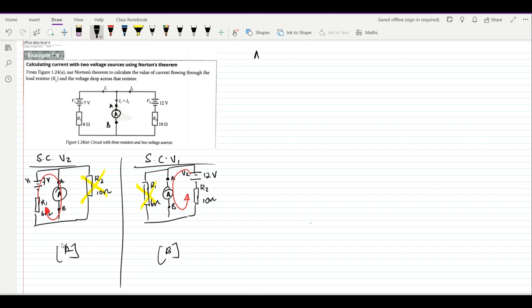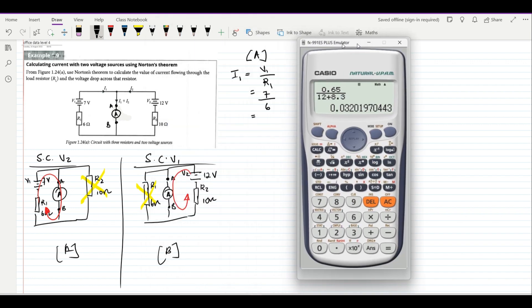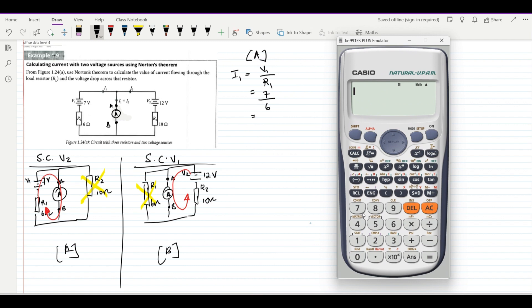First we are going to calculate for circuit A the value of I1, which is going to be V1 over R1, and this is 7 divided by 6. Remember folks, your calculator is always important—keep it handy so that it can assist you each time you make your practices.